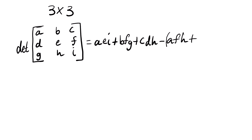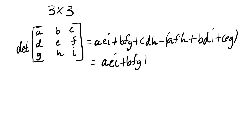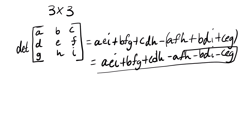...minus A·F·H, minus B·D·I, minus C·E·G. This is how we calculate our determinant. I know it's a bit challenging and doesn't make sense at first, but the concept is the same as a 2 by 2 matrix.